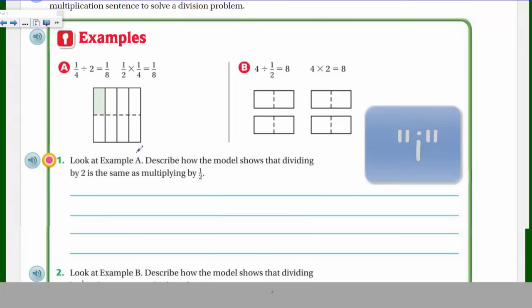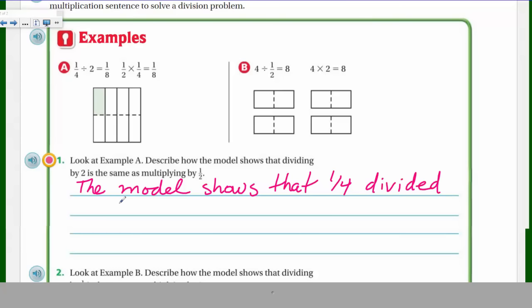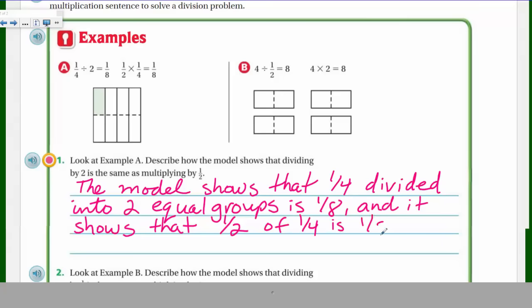Describe how the model shows that dividing by two is the same as multiplying by one-half. Looking at the model, how would that be true? The model shows that here one-quarter divided into two equal groups is one-eighth because they put that line across. They're showing that in half. We had a quarter of that whole. Now we've divided that and it's showing that now that is one-eighth, not one-quarter any longer. The model shows that one-quarter divided into two equal groups is one-eighth, and it also shows that one-half of one-quarter is one-eighth.